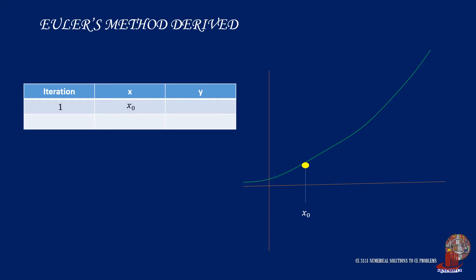How do we get the formula for this method? Say a differential equation curve is shown. An initial point is given with coordinates of x0 and y0.